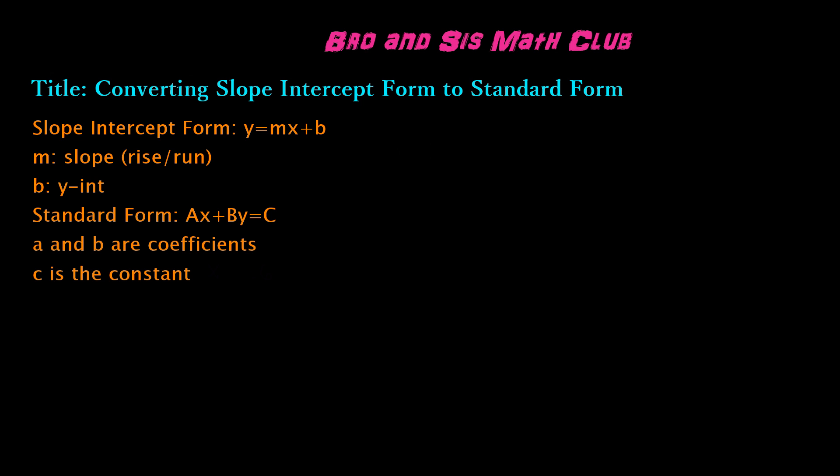The slope-intercept form of a linear equation is y equals mx plus b, in which m is the slope, which is rise over run, and b is the y-intercept.